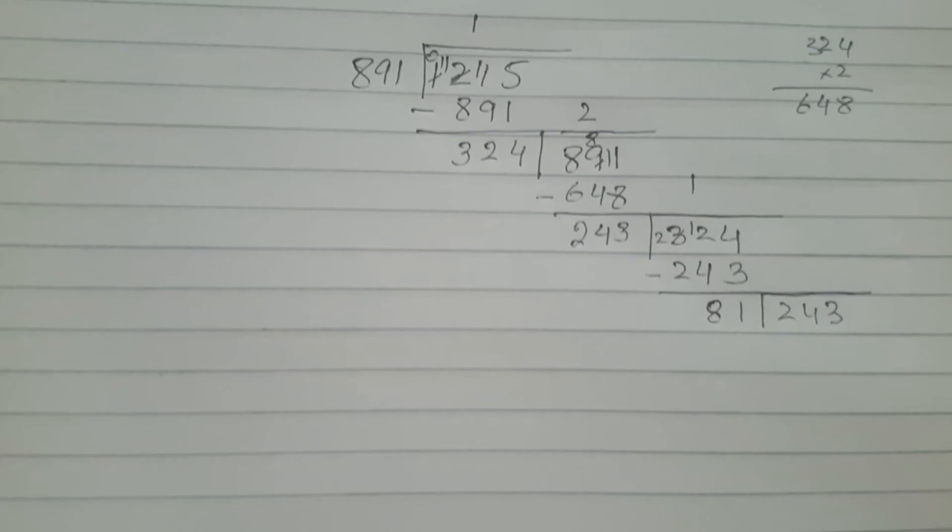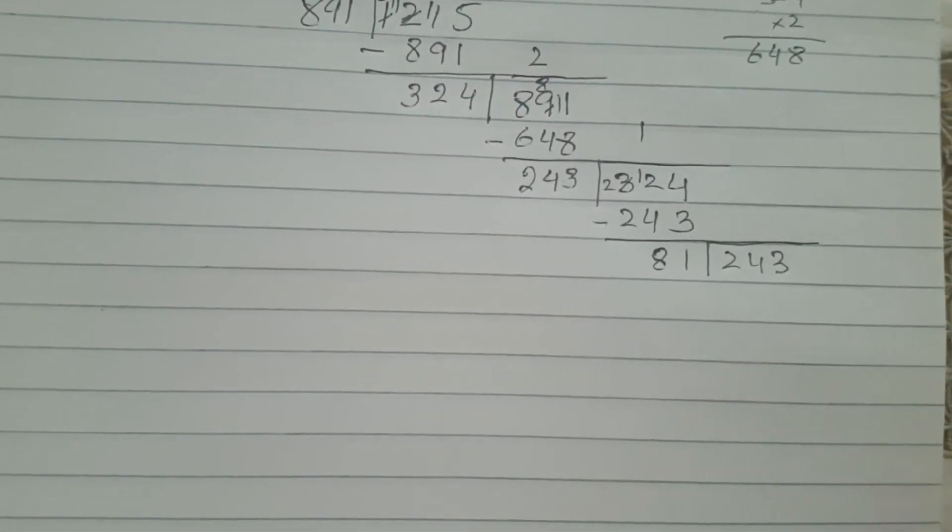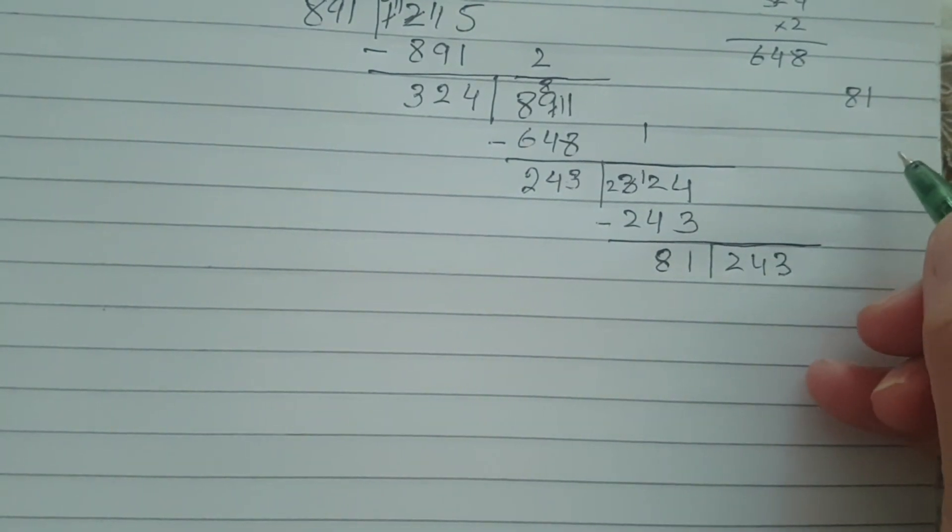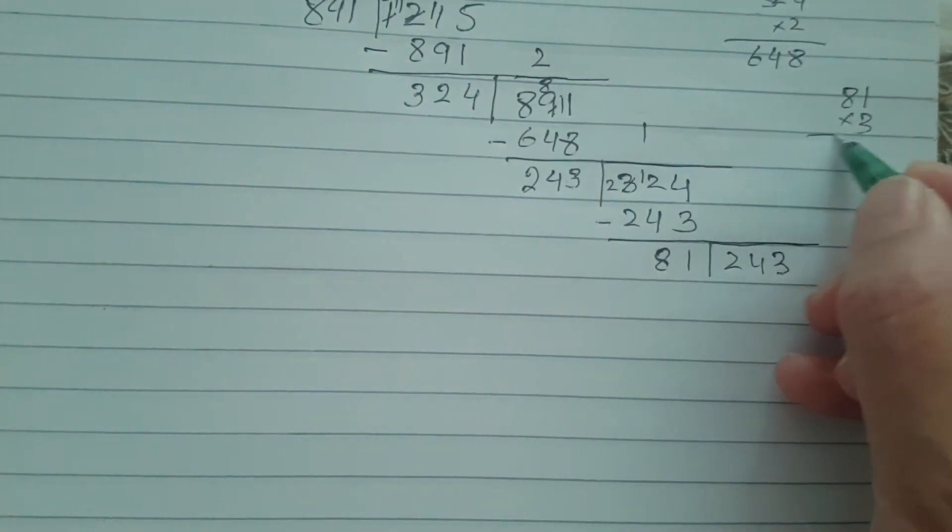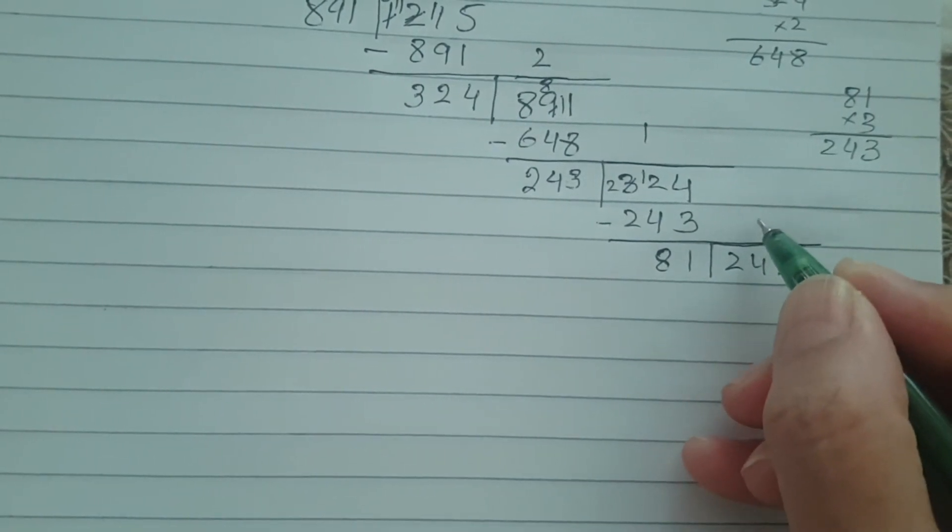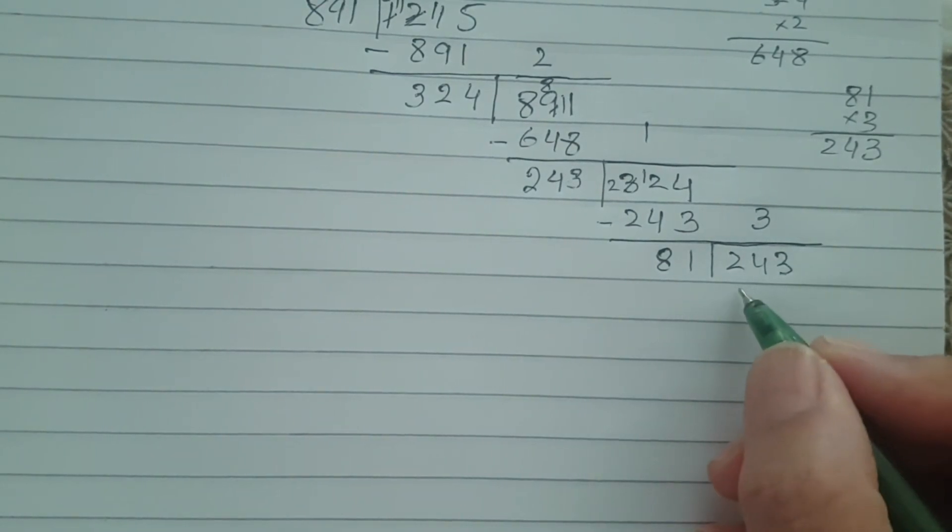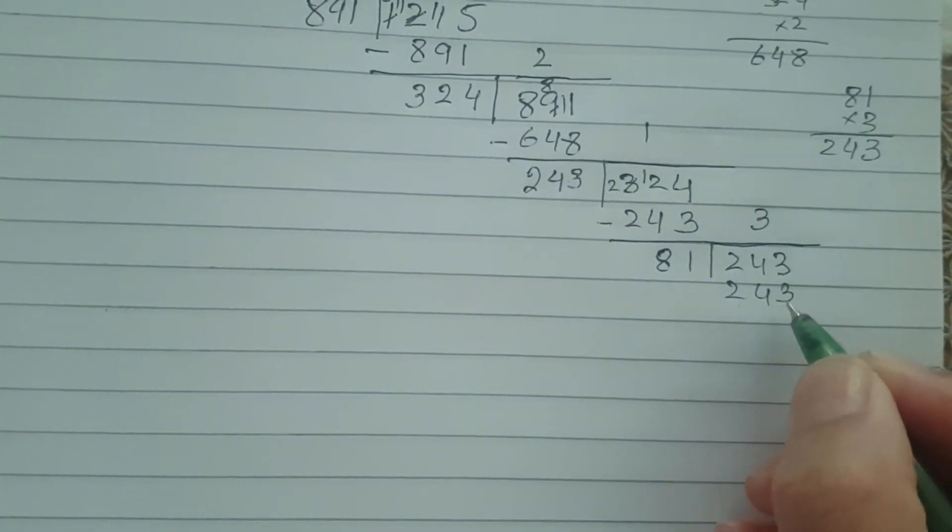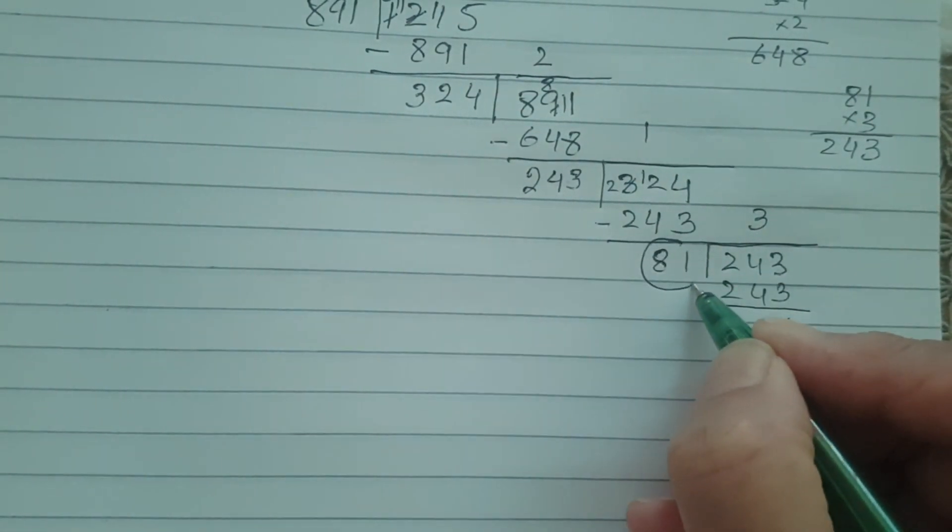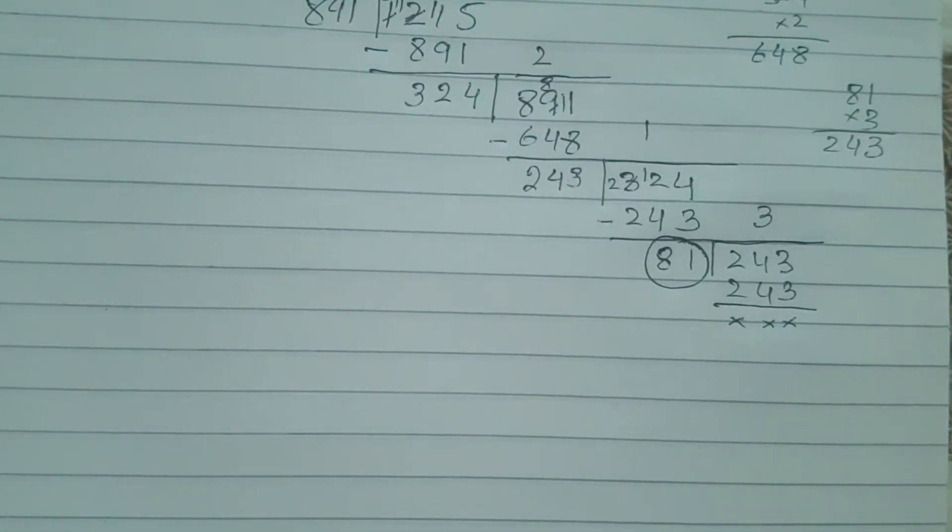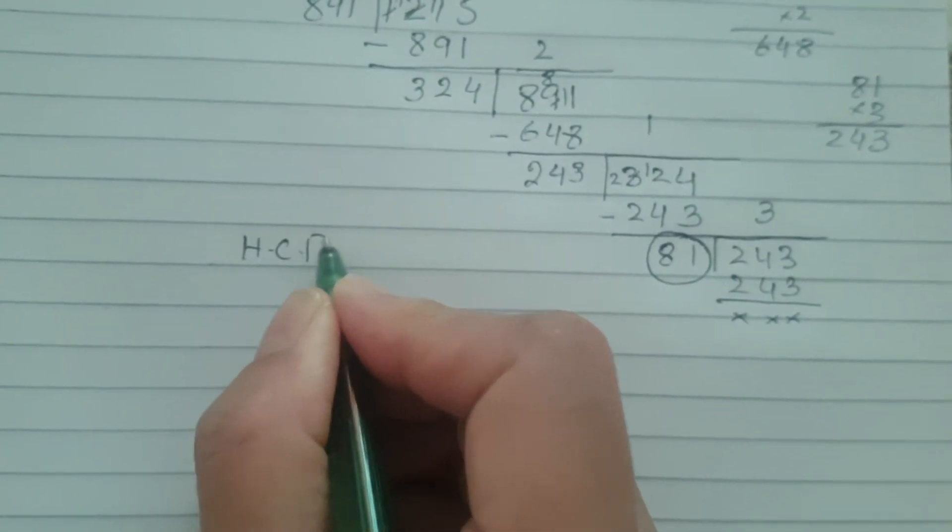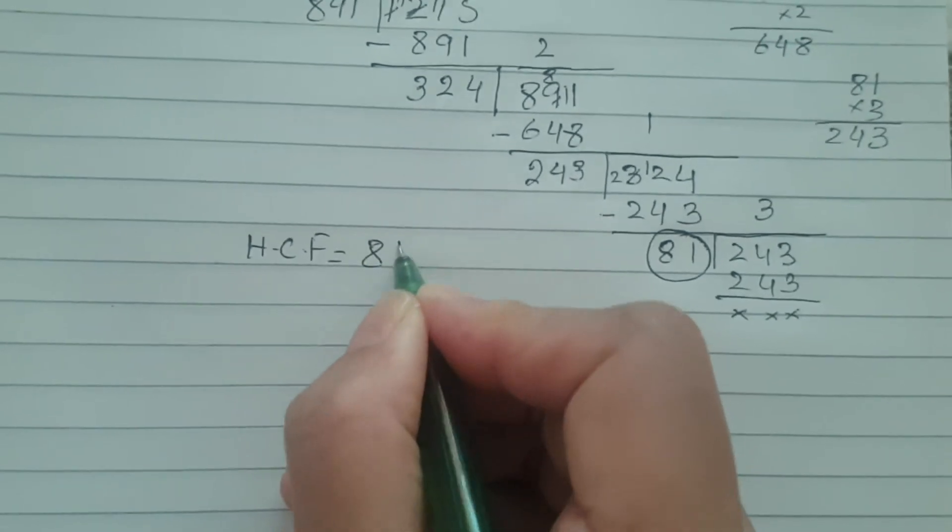81 how many times is 243? Let's see, 3 times maybe. 3 times 1 is 3, 3 times 8 is 24, so 81 three times is 243. So 81 is your highest common factor. HCF is 81.